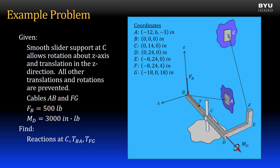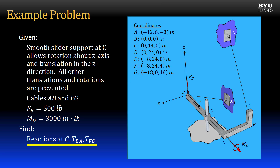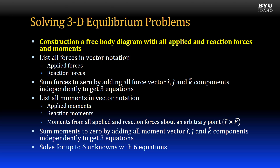We are given the coordinates of each point. We will find the reactions at point C and the tension in the two cables. Our first step is to construct a free body diagram with all applied and reaction forces and moments.